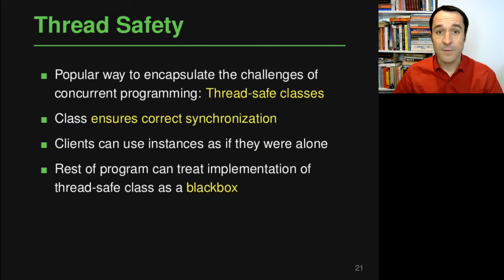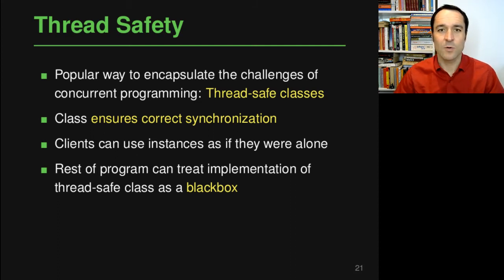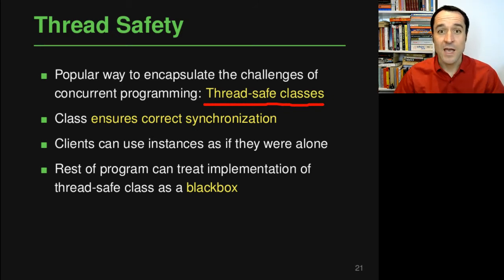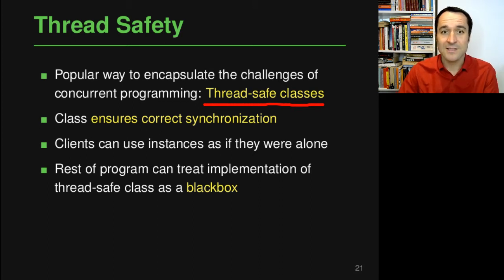Let's get started by defining what thread-safety actually is. It's a term that is sometimes used in a very informal way, but usually what it means is that it's a way to encapsulate the challenges of concurrent programming into a specific class in a language that has classes. These classes are then called thread-safe classes. The basic idea is that instead of using concurrency everywhere and bothering about having the right locks and synchronizing memory accesses correctly everywhere in your program, you delegate this task to a few classes that hopefully do that correctly.